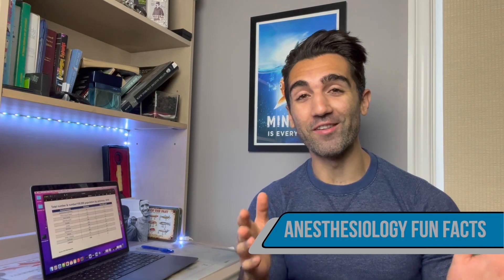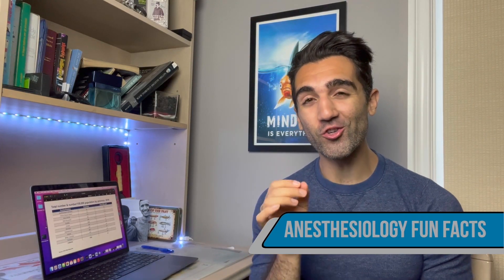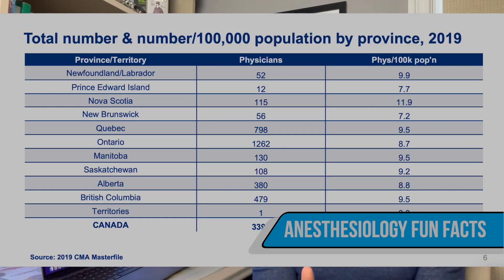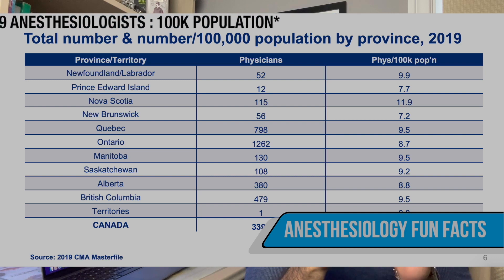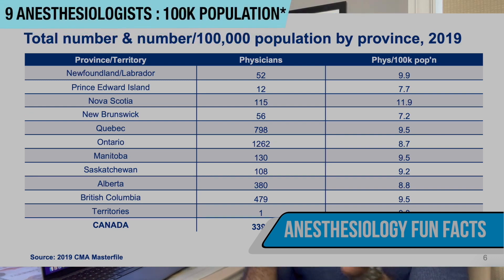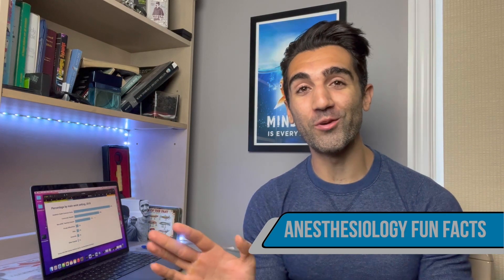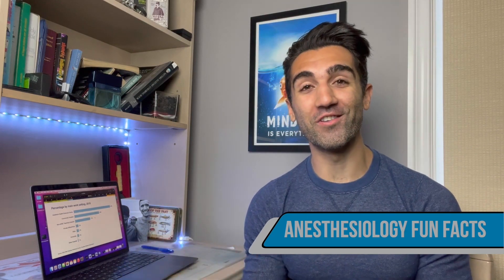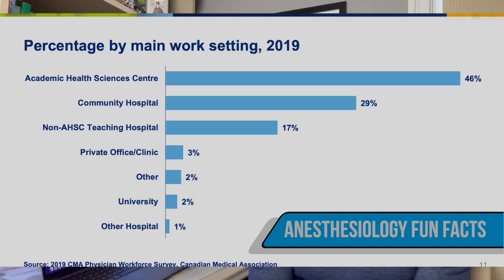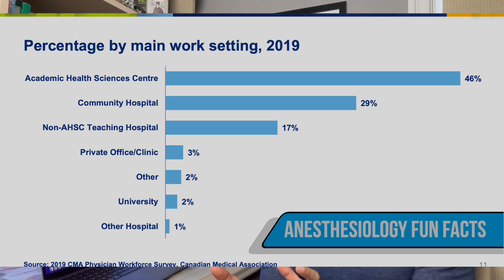Some quick facts about anesthesiology as a specialty in Canada: there are just under 3,400 anesthesiologists for the entirety of Canada, which works out to about nine anesthesiologists per 100,000 patients. On the screen you should be able to see the breakdown of where anesthesiologists tend to work. The majority tend to be at an academic health science center, some will go to a community hospital, and then you have some in private practice, teaching hospitals, or a university.